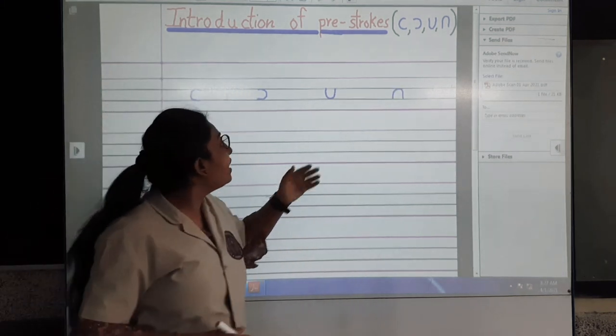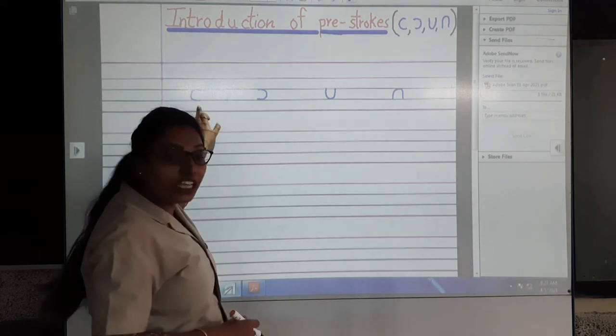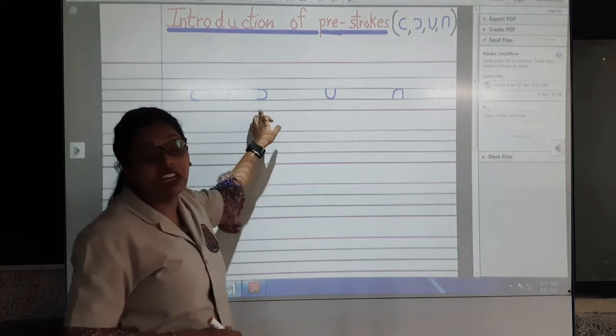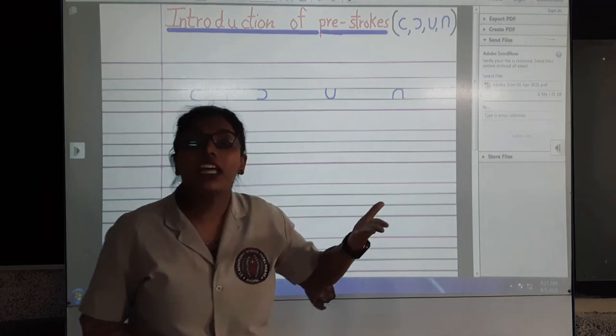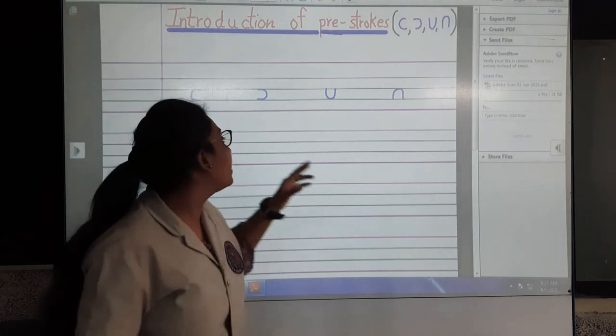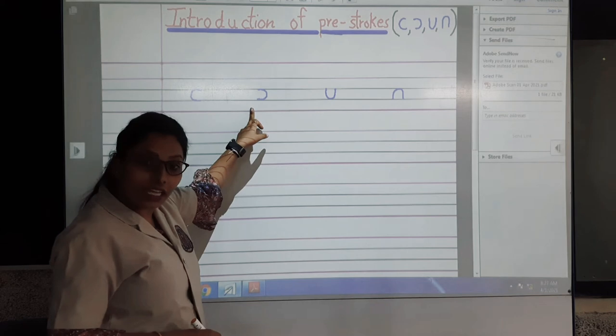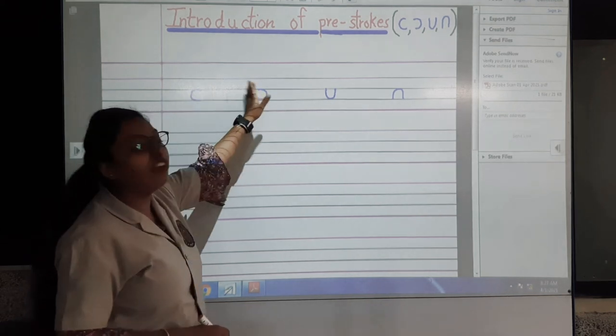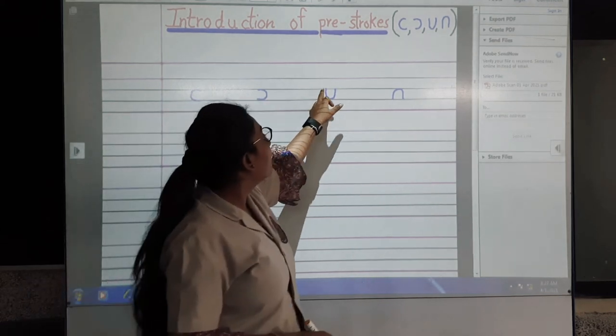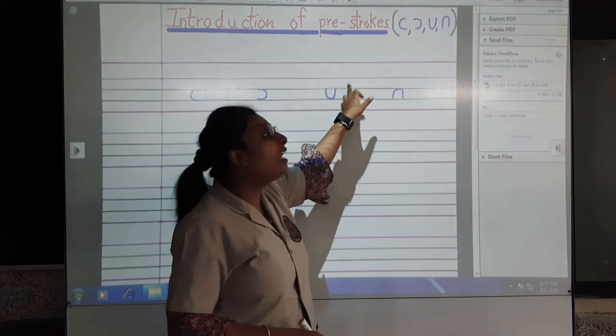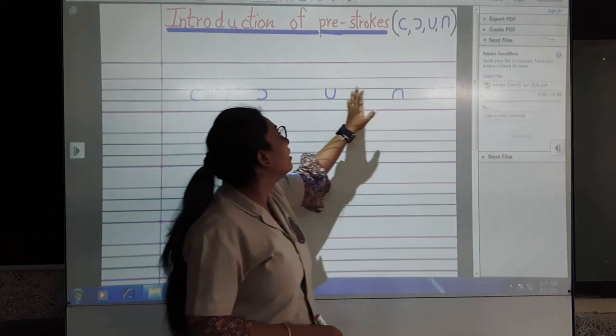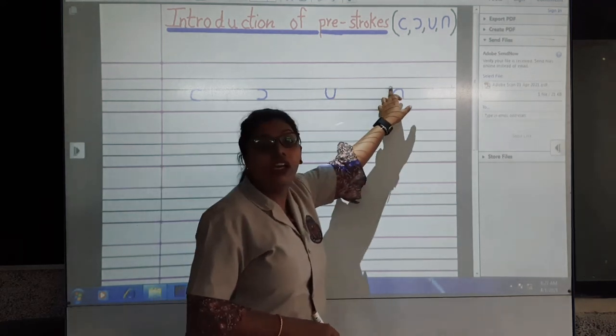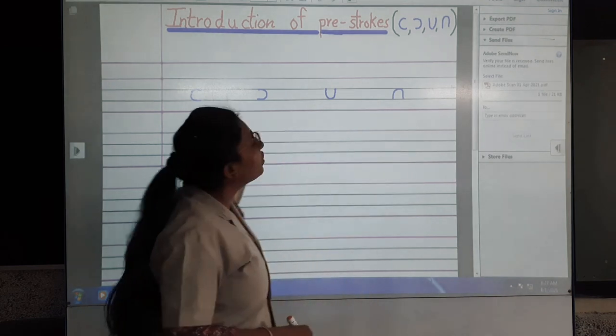So which ones do we make? C curve, inverse C curve. What is inverse? Inverse means ulta (opposite). You write opposite C. First straight, then opposite. Again U curve, then inverse U curve. So we have U curve and opposite U curve.